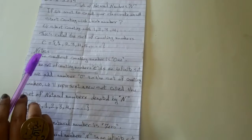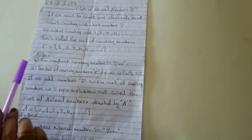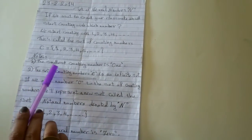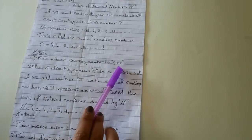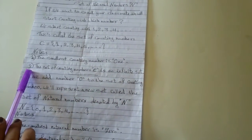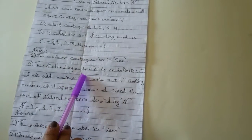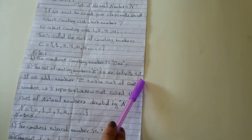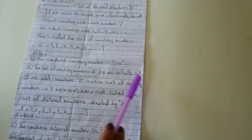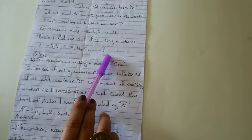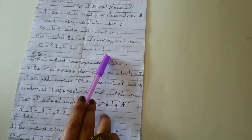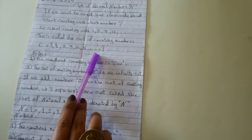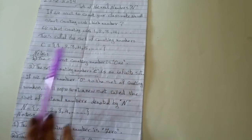We have two notes on this set. The first one, the smallest counting number is one. Number two, the set of counting numbers C is an infinite set. What the meaning of infinite? Infinite means has no end. We never stop counting. So this is an infinite set.